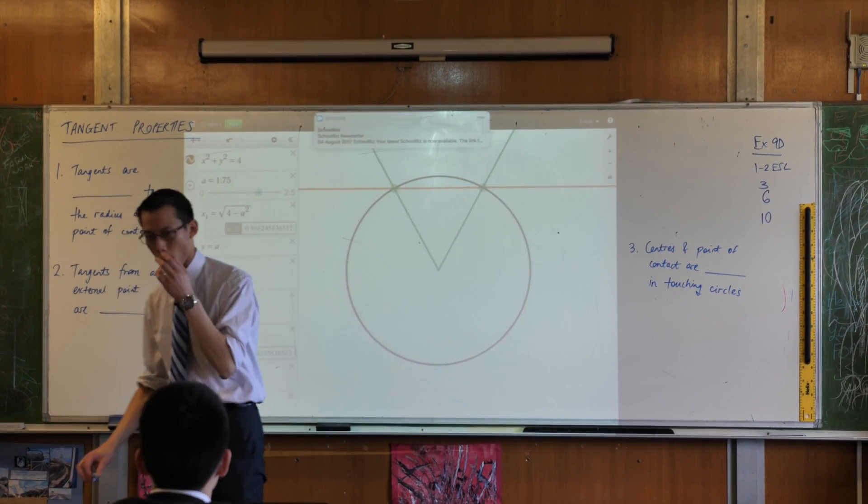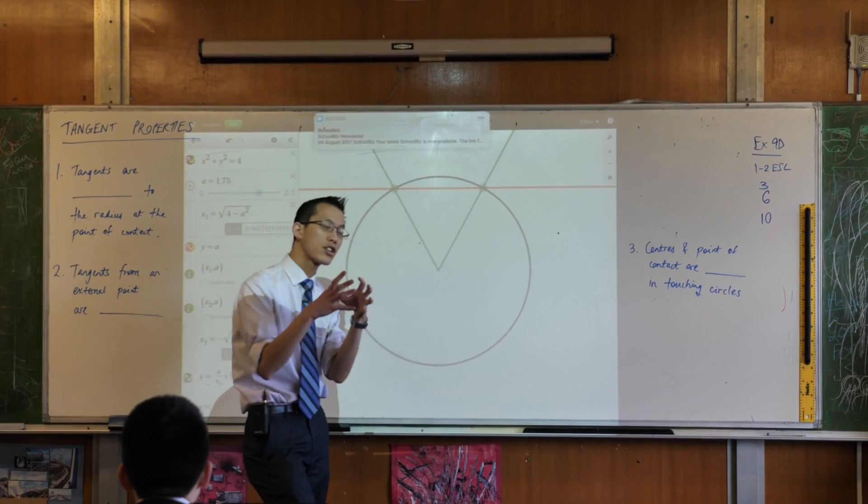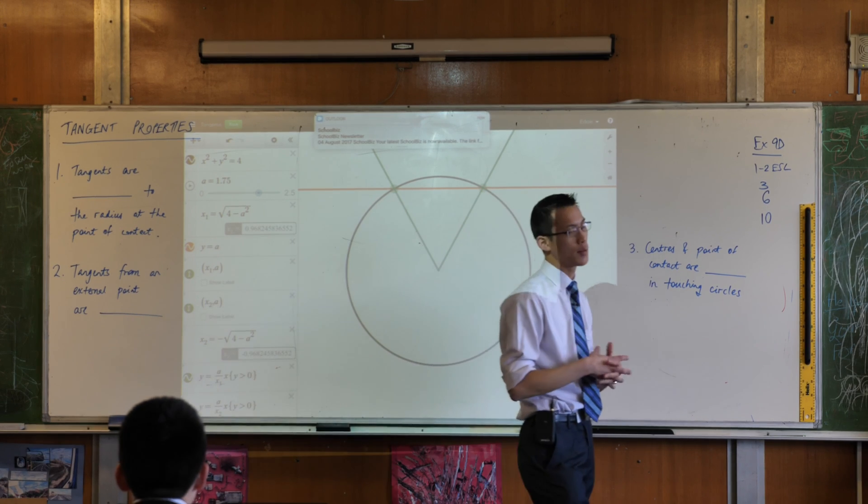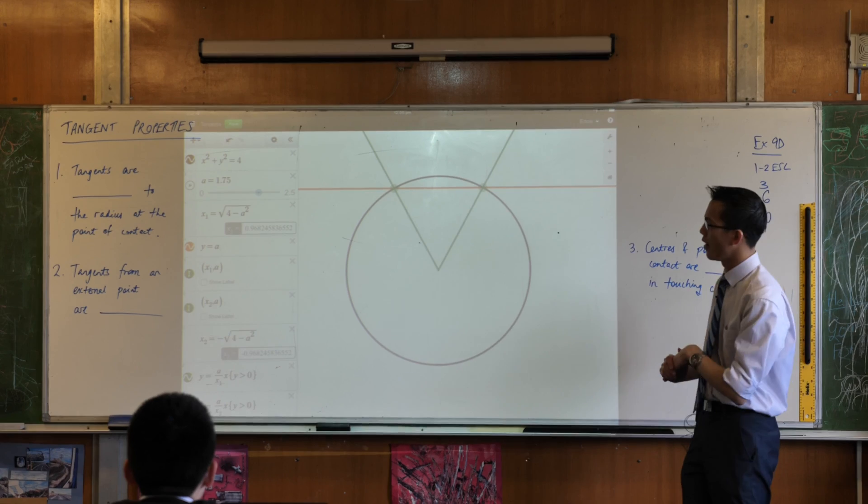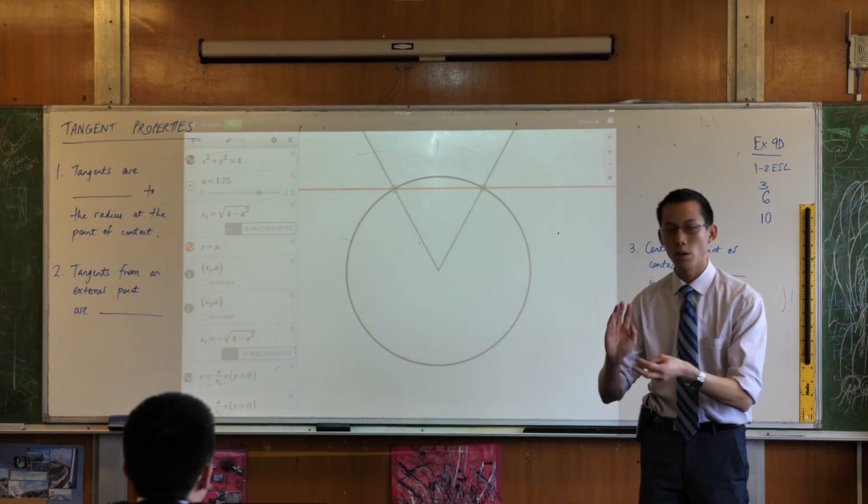We've had a look at a variety of different properties and I've tried to group them in categories. The very first one was about chords, I should say categories that somewhat overlap. The first one was about chords, then we looked at angles.